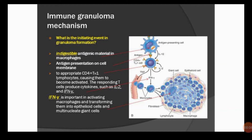Focusing on the figure for immune granuloma formation: an antigen presenting cell contains indigestible antigenic material, as the arrowhead points toward it. The APC presents antigen on its surface to CD4-positive cells, or T-helper-1 cells. T-helper-1 cells then produce cytokines: tumor necrosis factor, interferon gamma, and interleukin-2. Interferon gamma plays an important role in activating macrophages and transforming them into epithelioid cells and multi-nucleated giant cells.